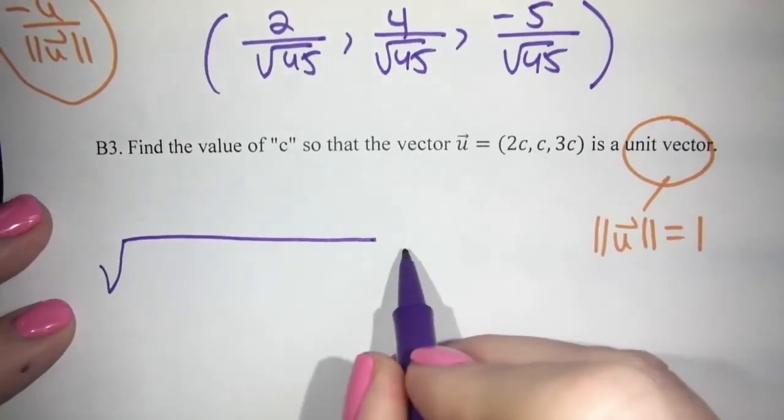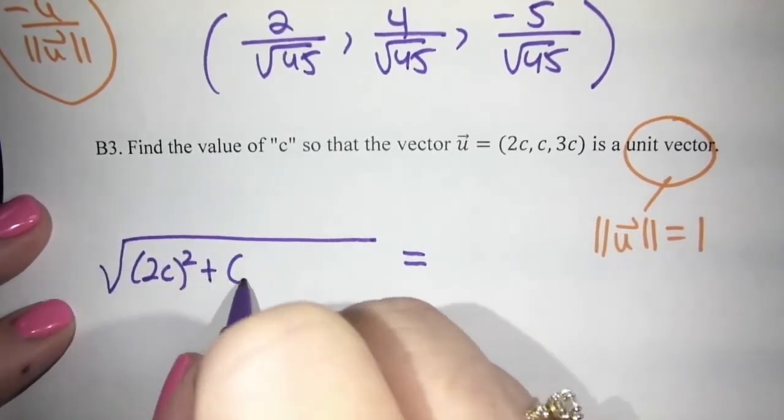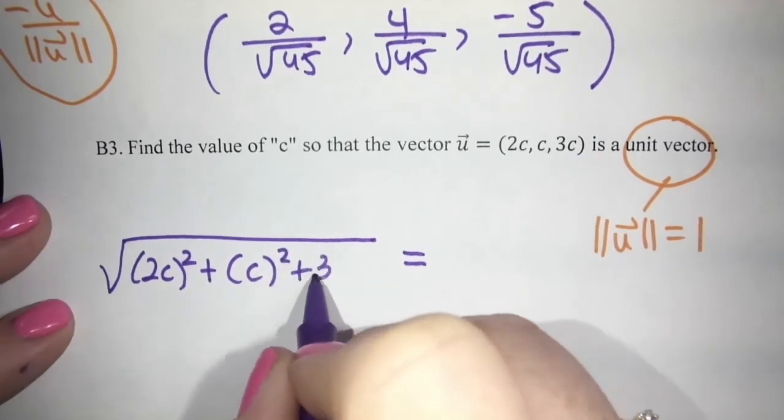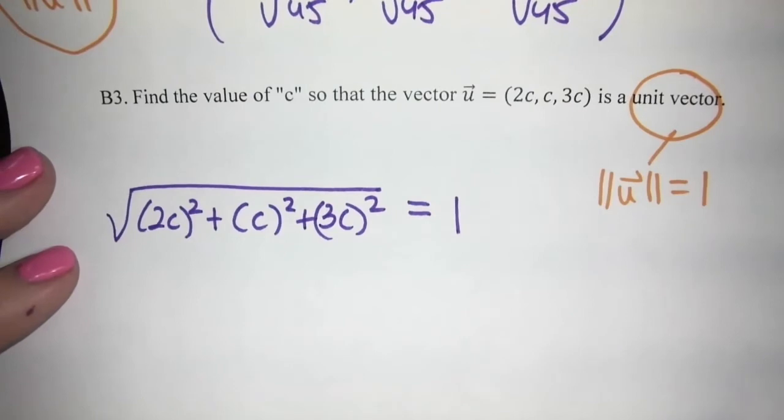So 2C squared, plus C squared, plus 3C squared. And we know it equals one, because it's a unit vector.